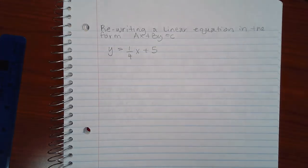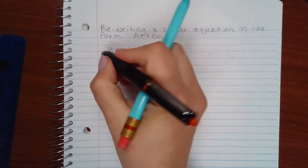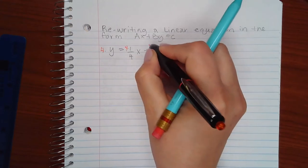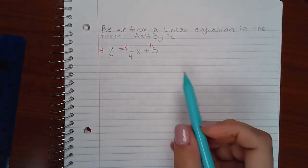So the first thing we want to do to get ours into that form is get rid of the fraction, which means we'll need to multiply every term by the common denominator, 4. So when I do that,